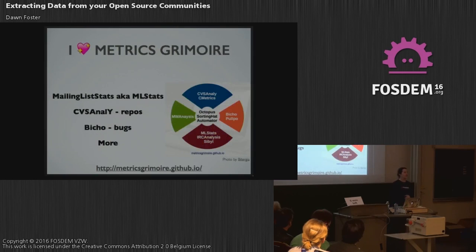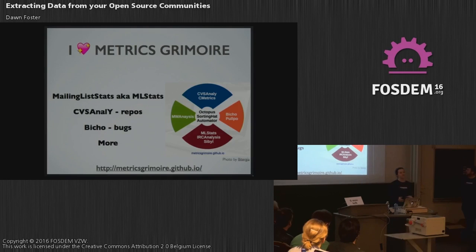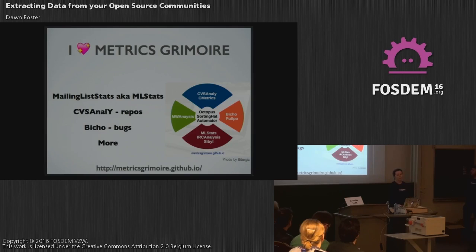I'm a huge fan of a set of tools called the Metrics Grimoire. It's an open source toolset. There are a whole bunch of tools that are part of it, which you can see in the wheel over here. All of the tools are focused on pulling data out of various pieces of open source communities, storing all that data nicely formatted in databases, where you can then write any kind of query you can possibly imagine. They're extremely useful if you have open source projects and you want to learn more about how people are participating.